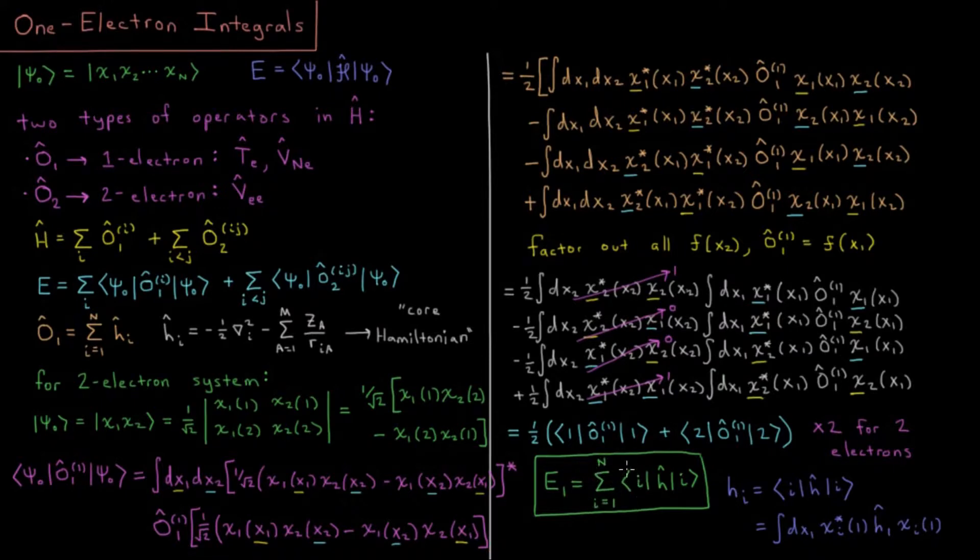It's basically saying how much kinetic energy plus nuclear attraction energy does that electron have, and then add that over all the electrons. So for all the complications introduced by Slater determinants and antisymmetry and all these different terms and making the electrons indistinguishable, the final result is kind of nice and physically intuitive.